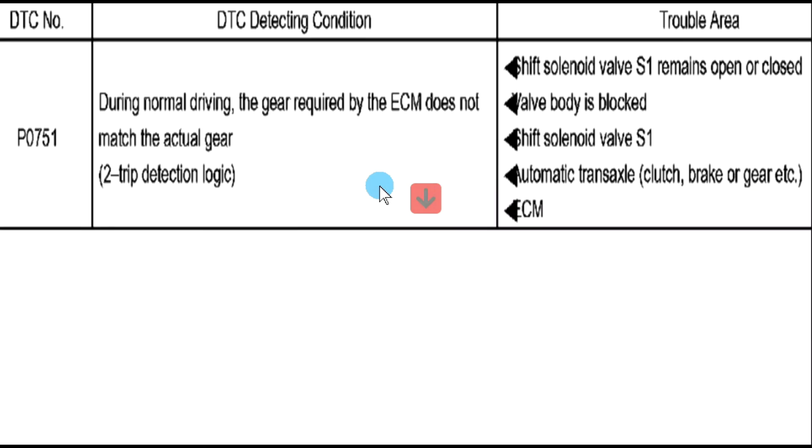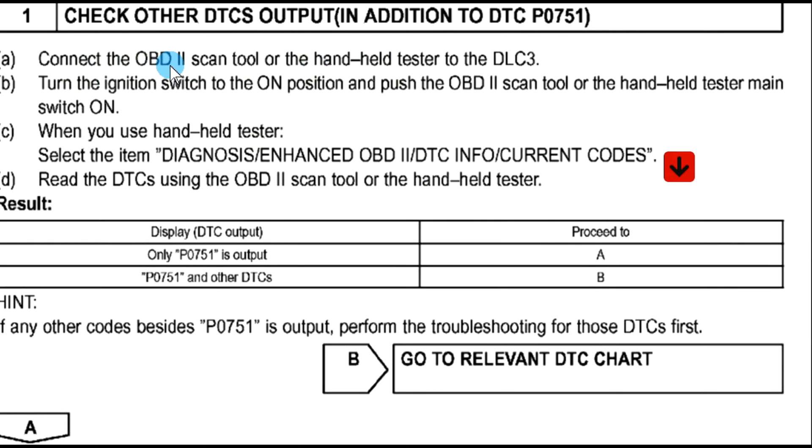Alright, now here with the software, as you can see, first let's take a look at the code here, P0751. Now, if you have a very good scan tool that can read all the data and live data of this solenoid, then that is great. So you still can do it without a fancy scanner.